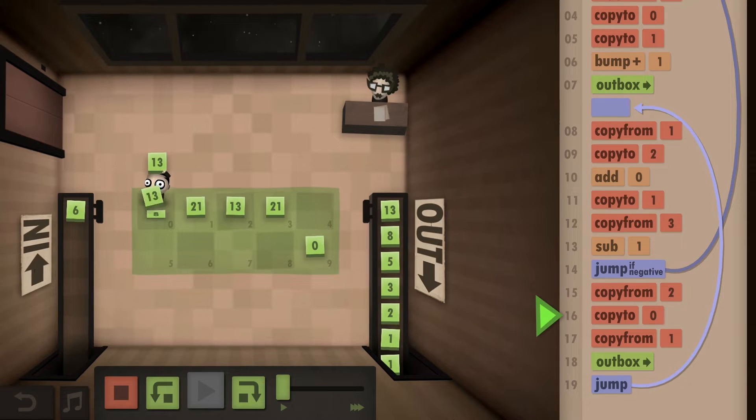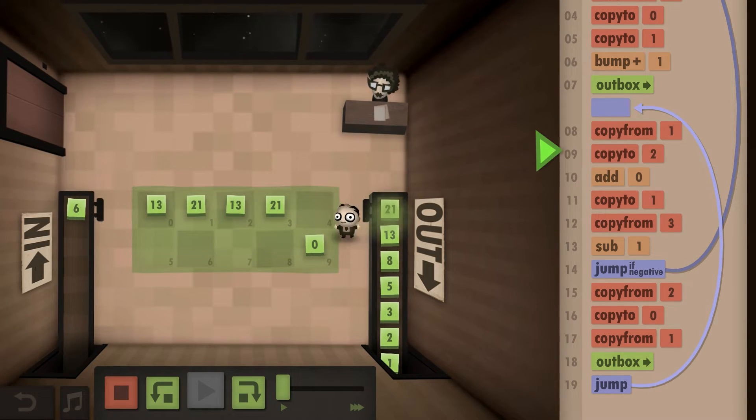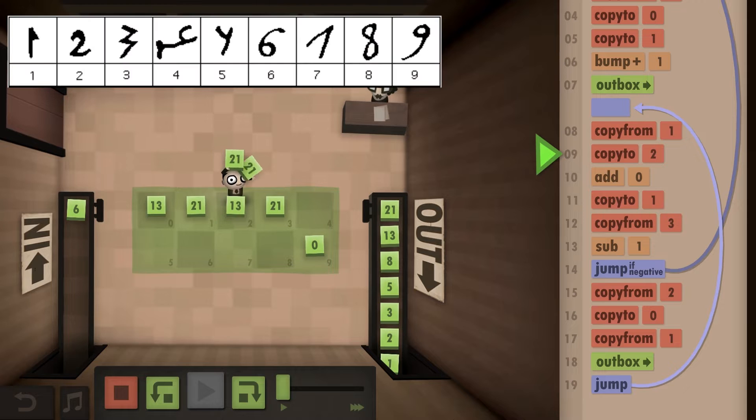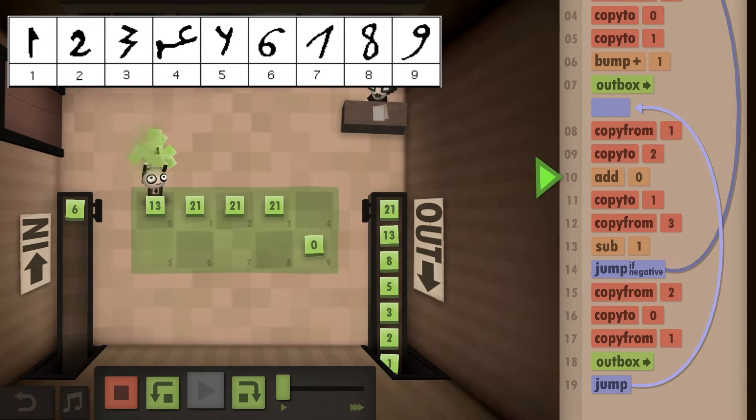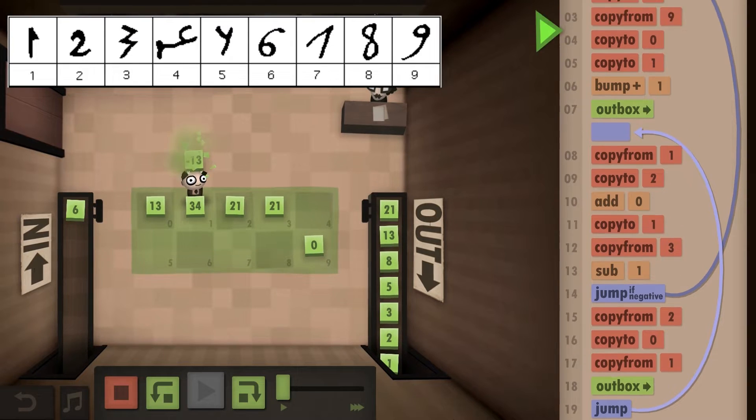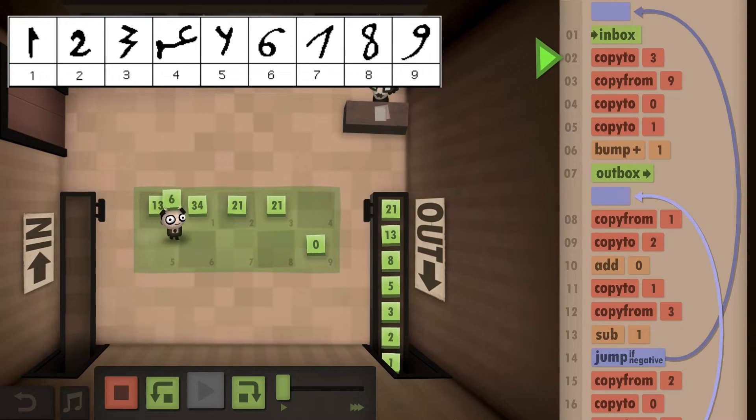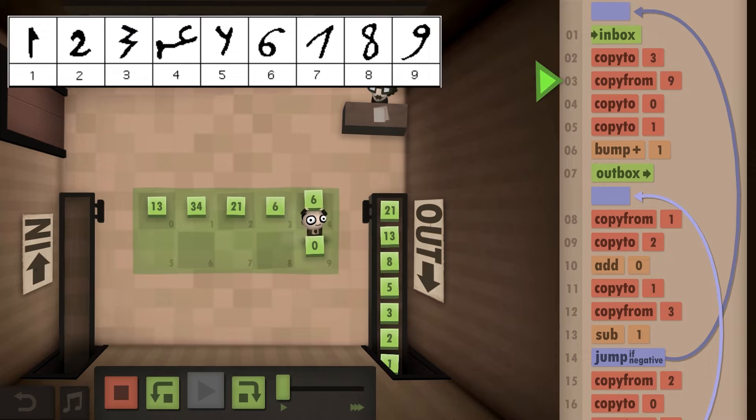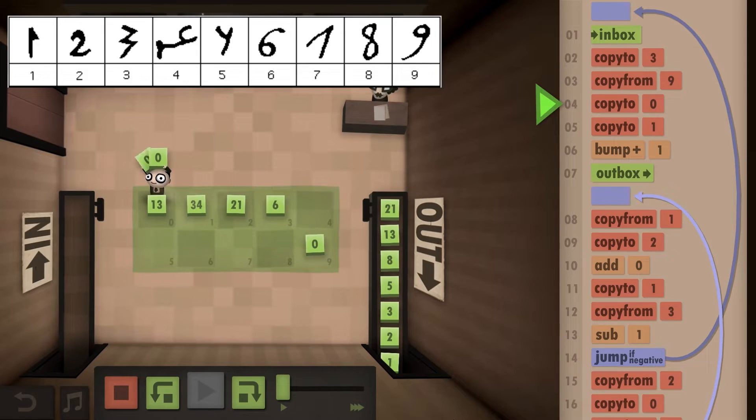There are other things that he did that are quite important in math. For example, he popularized the Arabic numerical system in the western world. If it wasn't for him, we would still be counting in a really strange way. He took the Arabic numbers from the Arabic mathematicians and brought them to our western world.